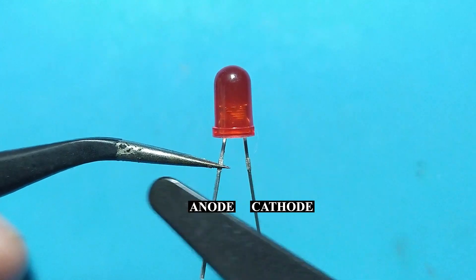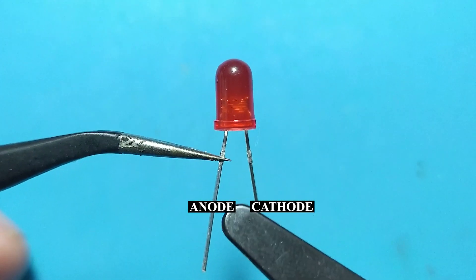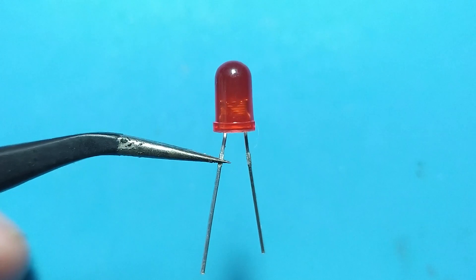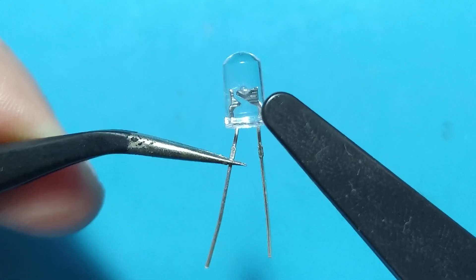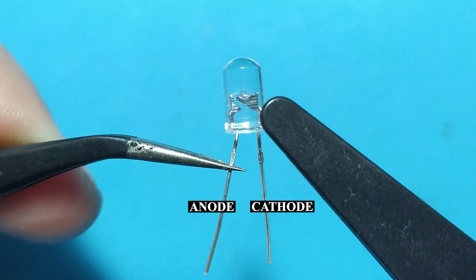Always in the case of the luminescent diode the longer terminal will represent the anode. And to tell you a little trick, inside this plastic body we will see a larger metal part. This part represents the cathode.